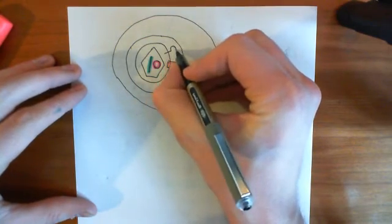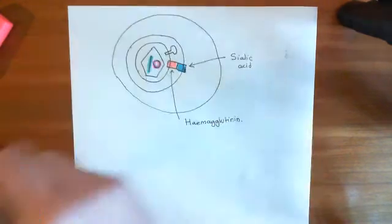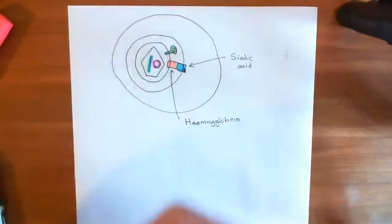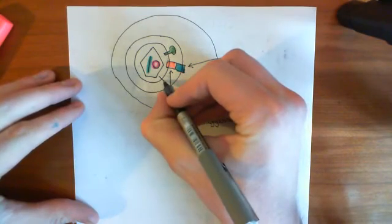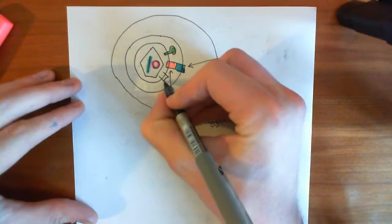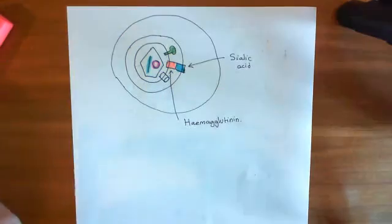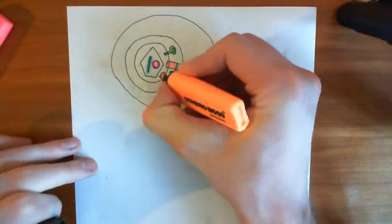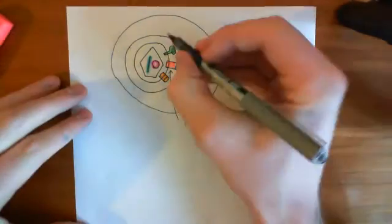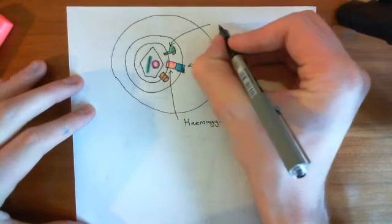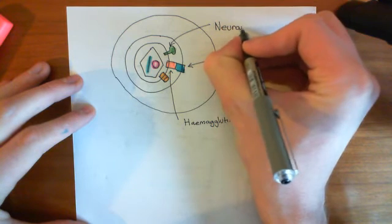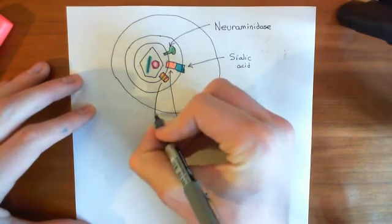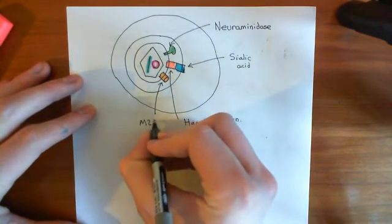We also have neuraminidase in the viral envelope, though it won't be important yet. The one that is going to become important now is the M2 ion channel. The M2 ion channel allows protons to move through it.